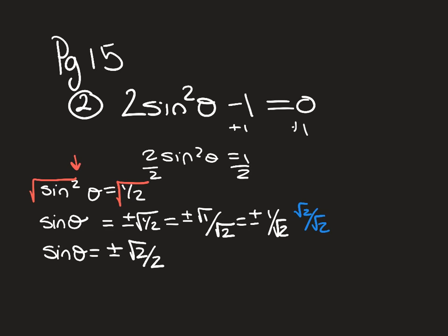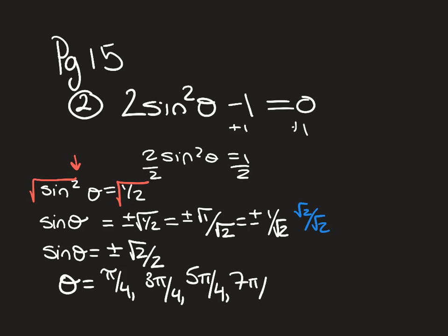With sine θ = ±√2/2, you find all places where the y-value equals √2/2 — all the 45° angles. So θ = π/4, 3π/4, 5π/4, and 7π/4. Those are the four answers for number 2.